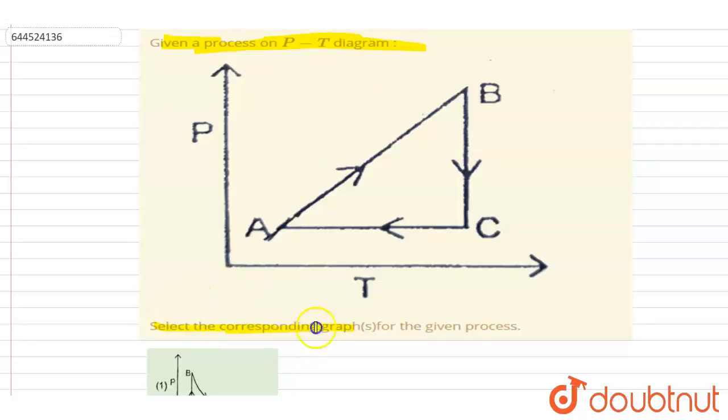PT diagram, select the corresponding graph for the given process. Let us see the graph. First of all, you can see very clearly that this is an isothermal process with pressure decreasing if you go from